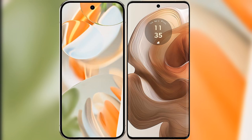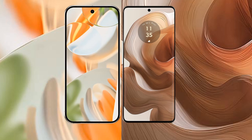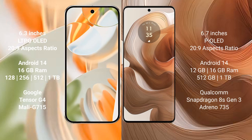We will compare the new Google Pixel 9 Pro with the Motorola Edge 50 Ultra. The Google Pixel 9 Pro features a 6.3-inch LTPO LED display, while the Motorola Edge 50 Ultra features a 6.7-inch OLED display.